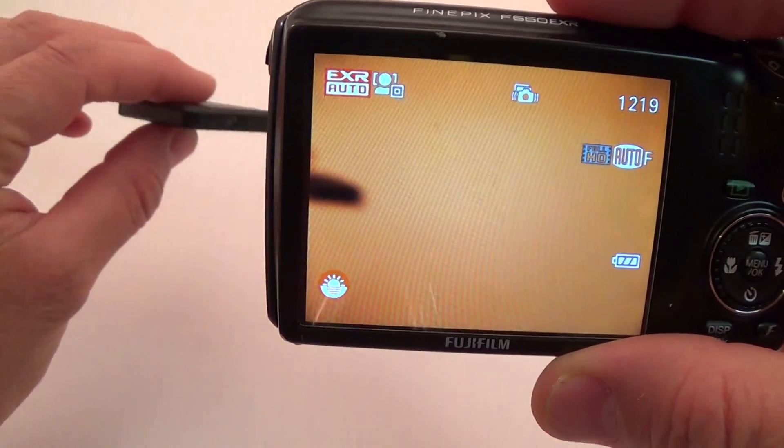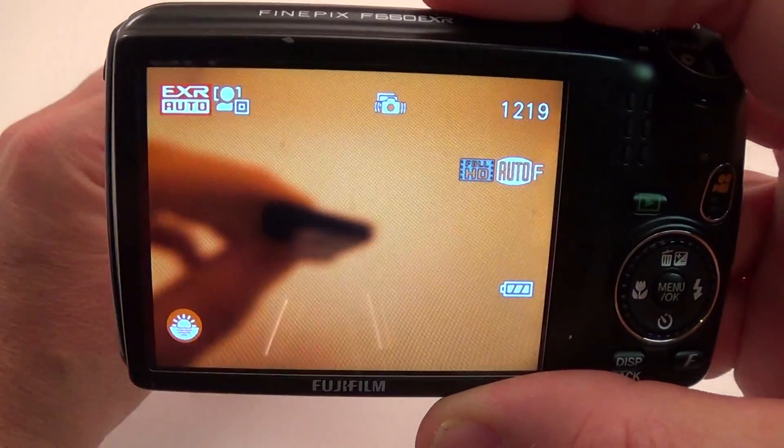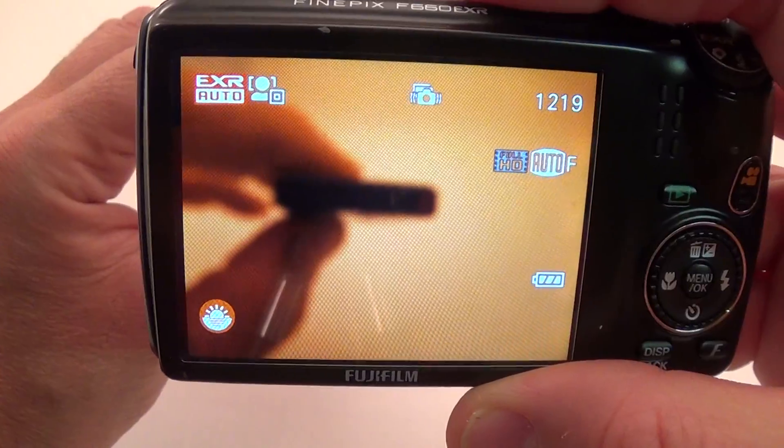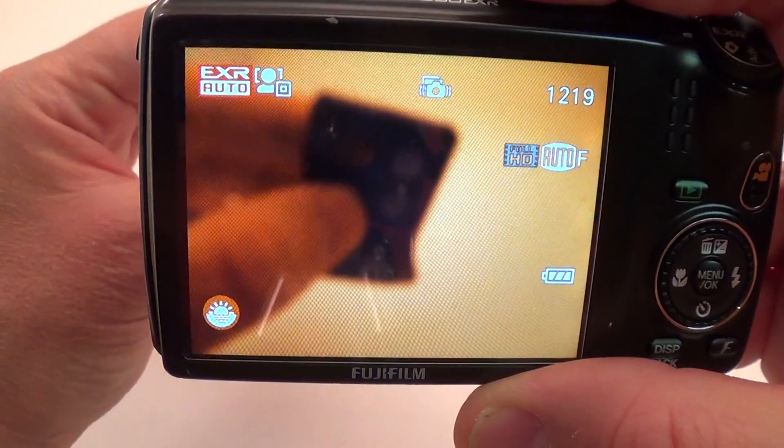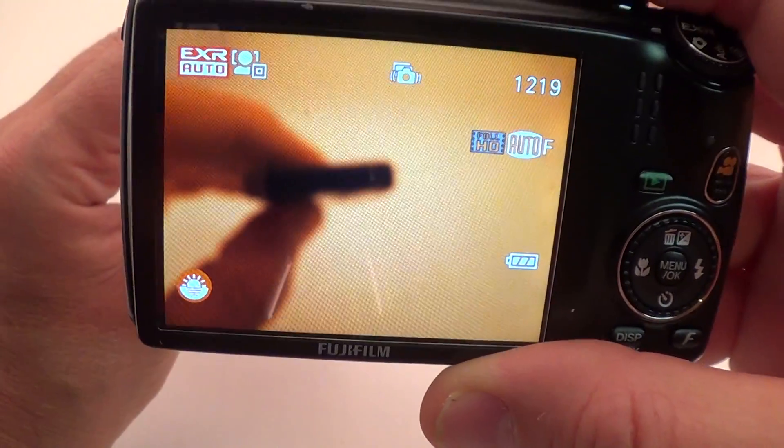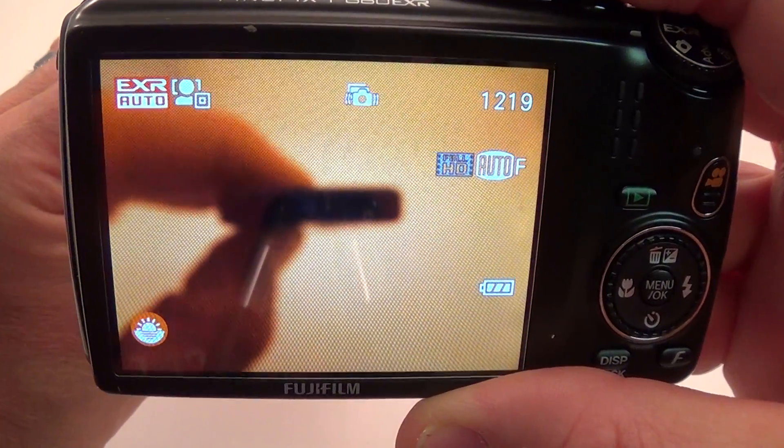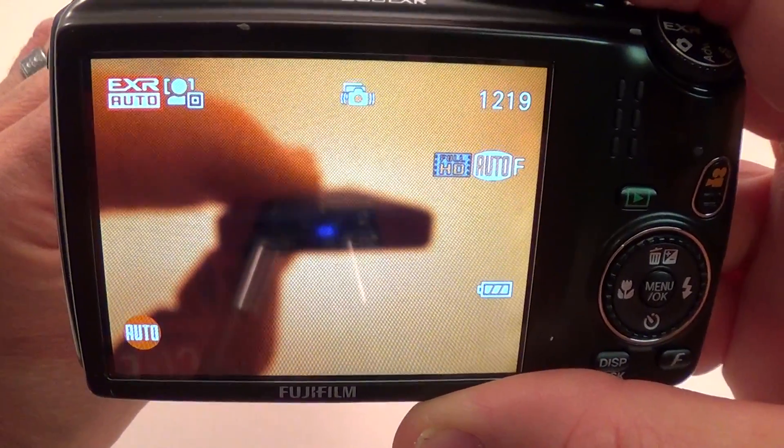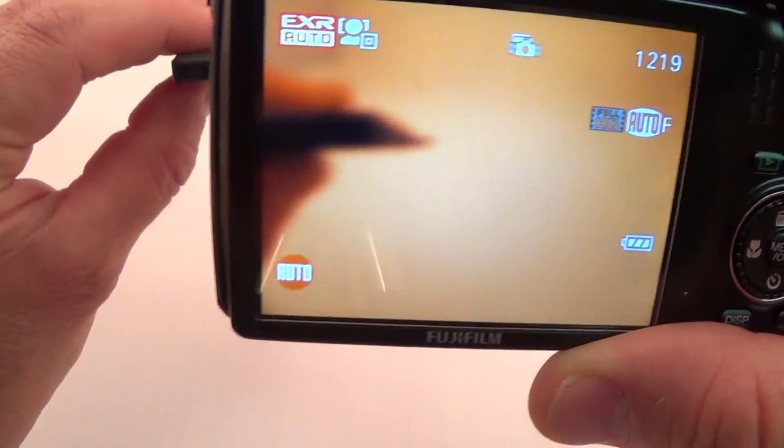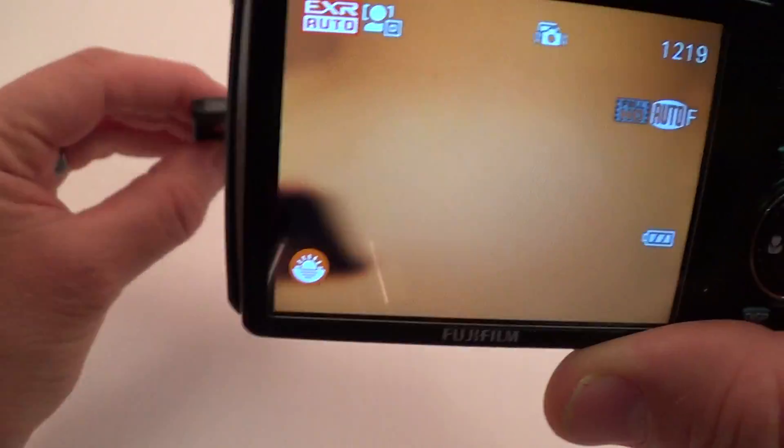Okay, so now we can see infrared light by pointing the remote control at the camera lens and just holding one of the buttons down. And you can see there is some infrared light being emitted from that LED you normally otherwise wouldn't see with your own eyes.